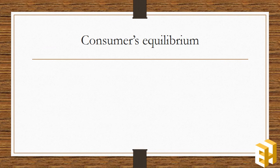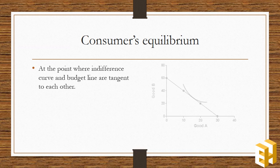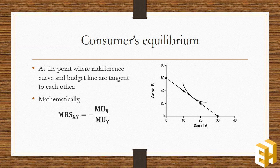Consumer's equilibrium will be attained where indifference curves and budget line are tangent to each other. Mathematically, the equilibrium will be attained where the ratio of marginal utilities attained from two goods is equal to the marginal rate of substitution.